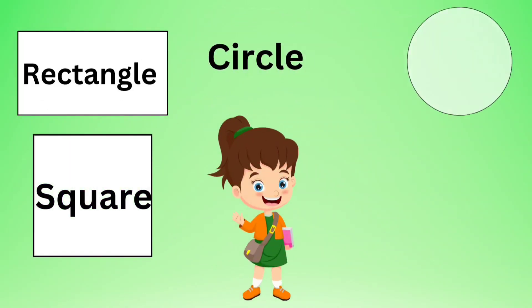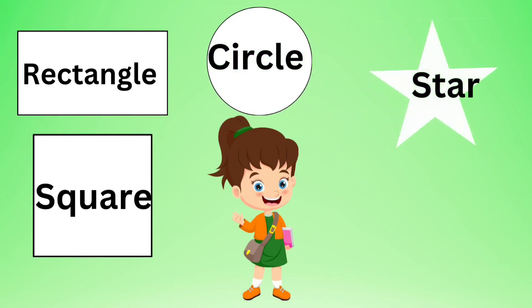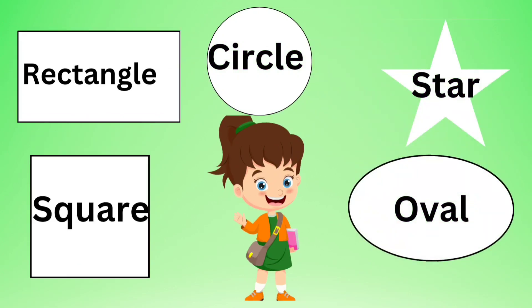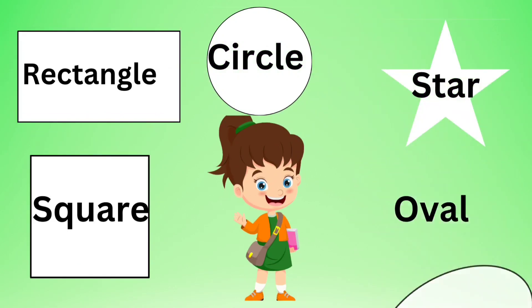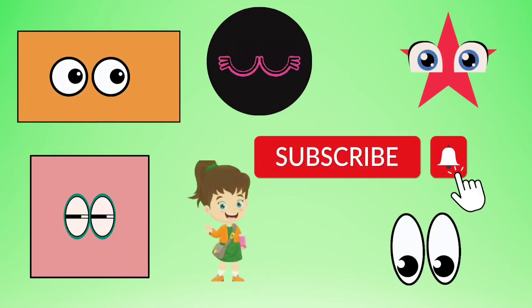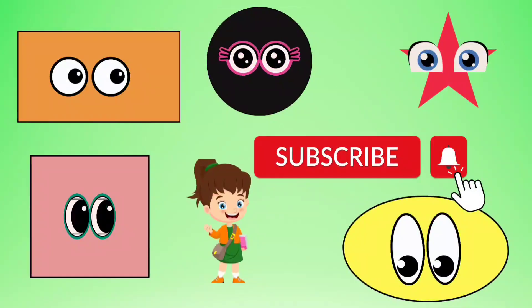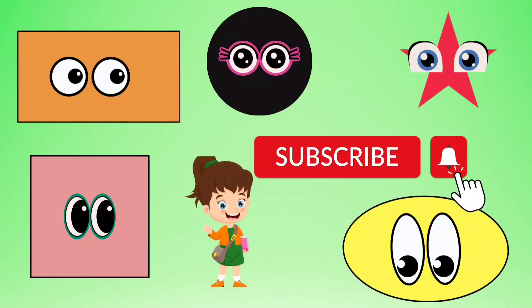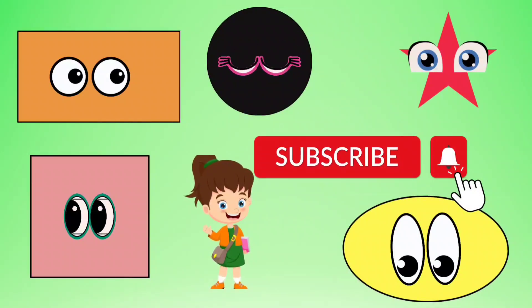What are all the shapes we learned today? We learned rectangle, square, circle, star, triangle, and oval. If you like this video, please subscribe.